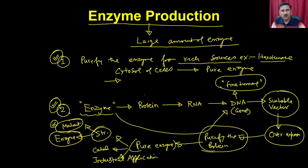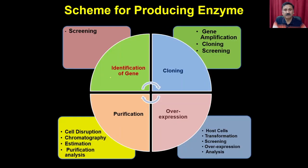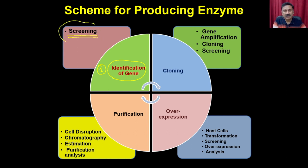In approach 2, the first step is to identify the gene. You do this by screening different types of clones — which we will discuss in detail. You need to screen the gene in a pool of genes to identify the gene responsible for the production of enzyme X. Once you identify the gene, you clone it into a suitable vector.